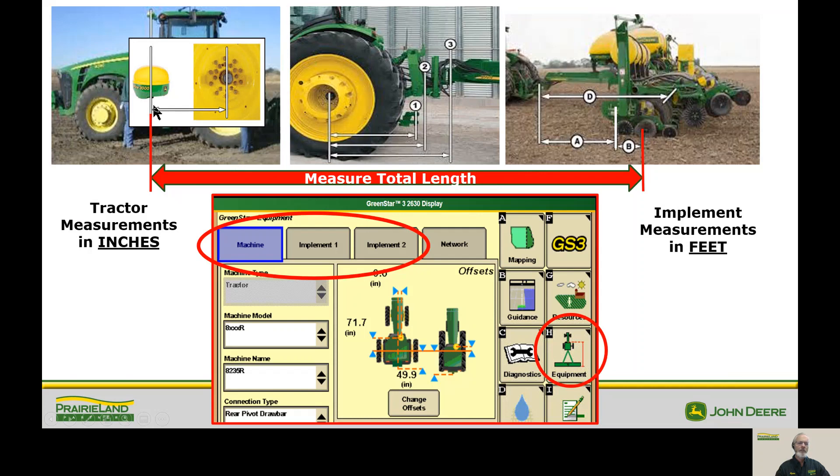The first one being from the center of the receiver to the axle. The second one is from the axle to the pivot point. There are three options here. You could be the drawbar, you could be the three point hitch, or the one I like to recommend is the pivot point on the planter. That is going to give you a better representation of how things are turning in the field.